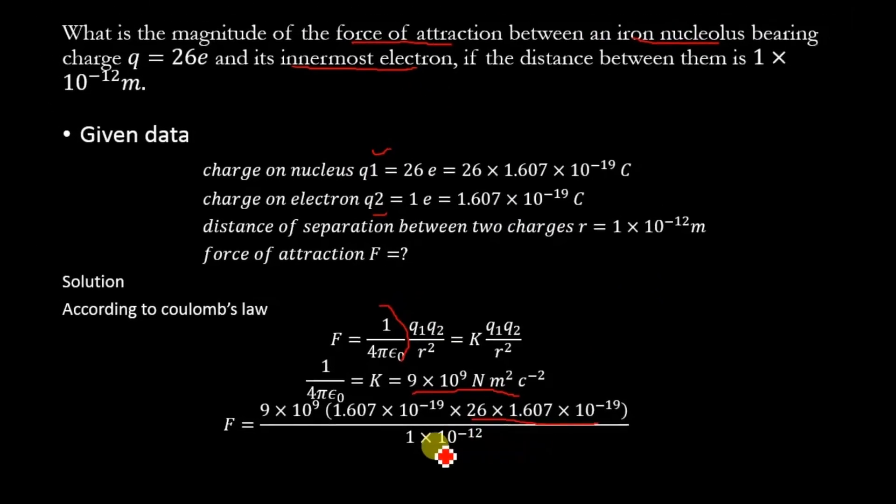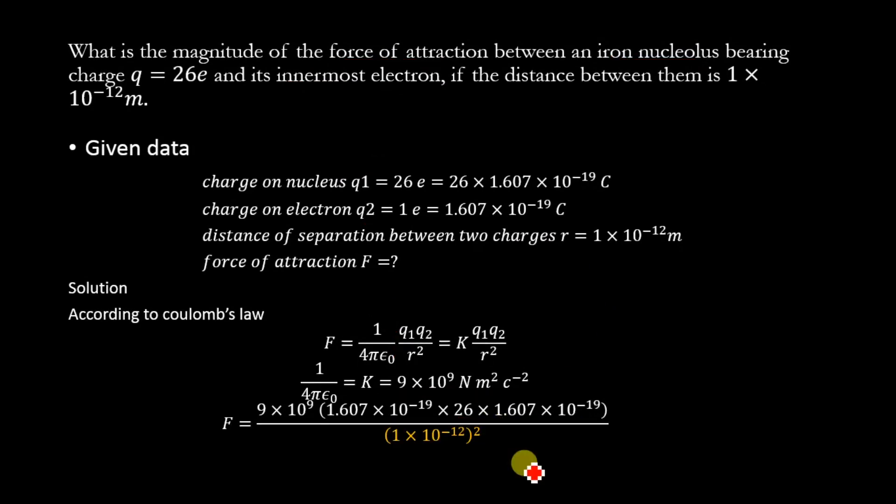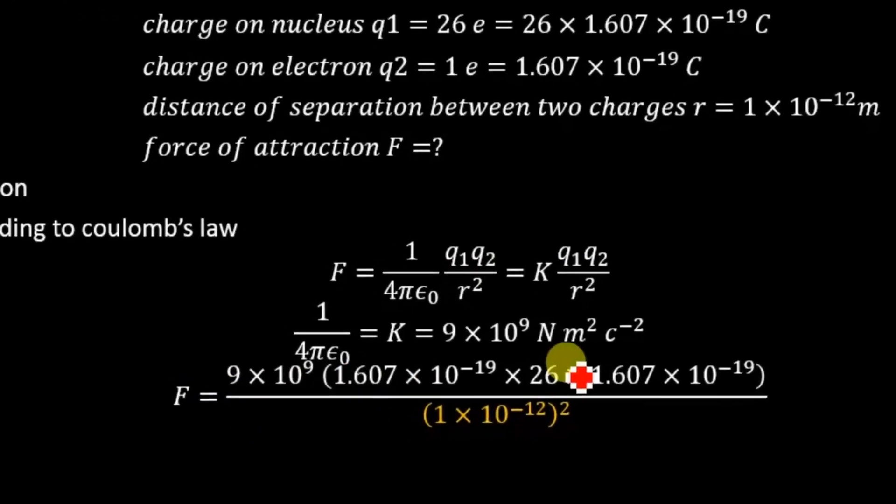Divided by r². Taking the square, r² = (1 × 10^-12)². Now let's solve this equation.